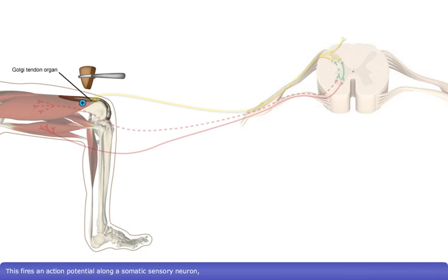This fires an action potential along a somatic sensory neuron, which travels via the dorsal root of a spinal nerve into the spinal cord.